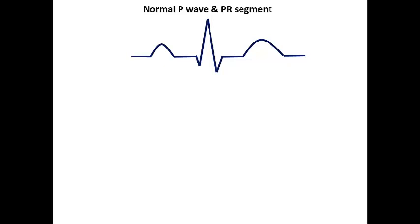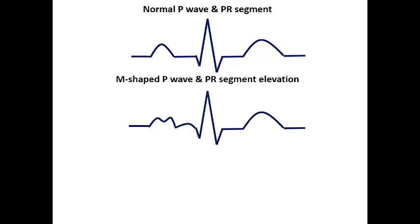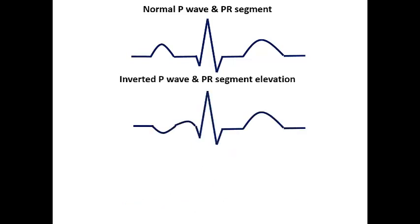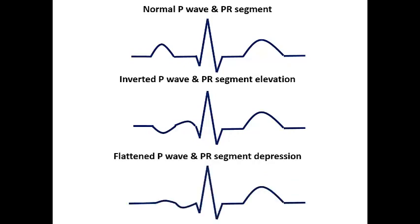Here is an example of atrial infarction. The P wave has a change in morphology — it is M-shaped — and the PR segment is slightly elevated compared to the TP segment. Another example shows low amplitude and slightly irregular P wave shape with PR segment depression, suspicious of atrial infarction. Another example shows an inverted P wave with PR segment elevation. And here we see a flattened P wave — or in some cases a disappearing P wave — with PR segment depression.